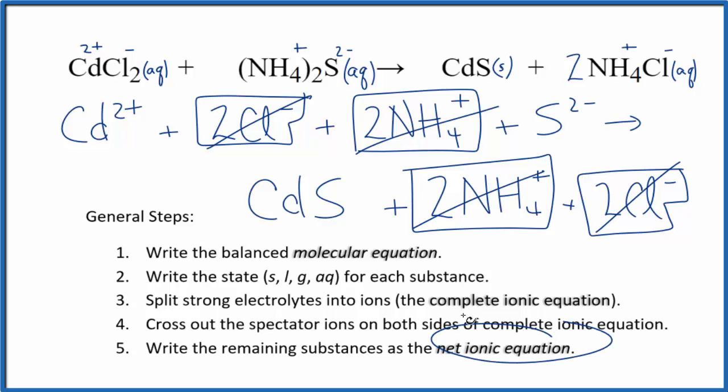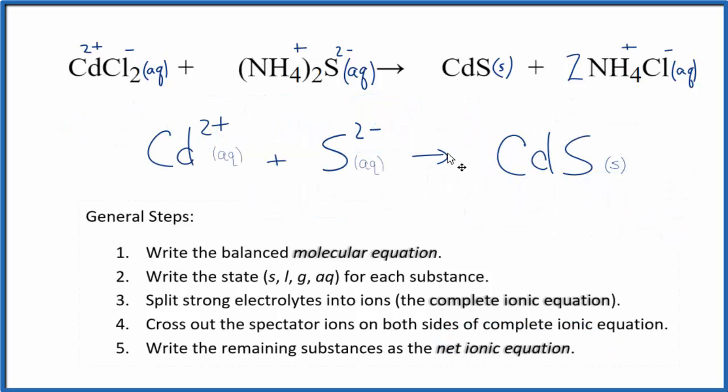What's left, that's the net ionic equation for CdCl2 plus (NH4)2S. Let me clean this up, write the states. We'll have our net ionic equation. So this is the balanced net ionic equation. We have our charge conserved. We have 2+ plus 2-. That gives us a net charge of 0. This is neutral over here, net charge of 0. So charge is balanced. If you count the atoms up, they're balanced too.